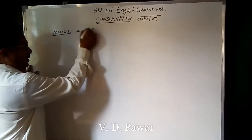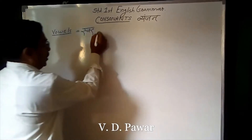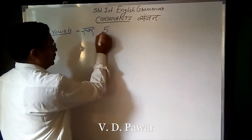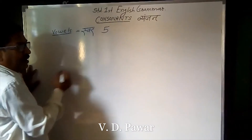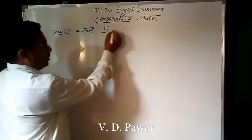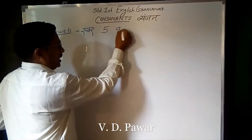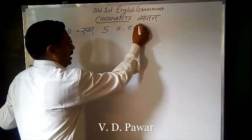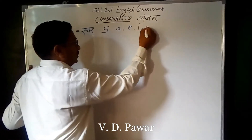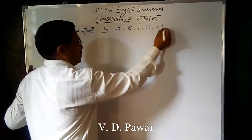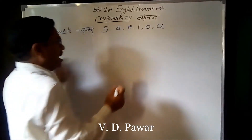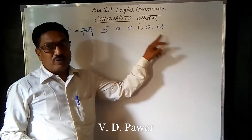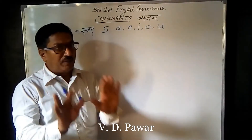How many vowels are there? Five. A, E, I, O, U. These are the five vowels.